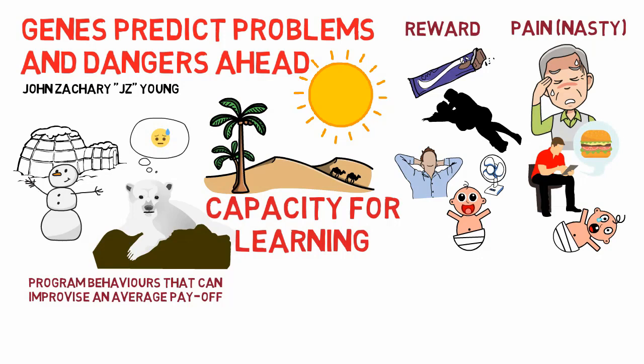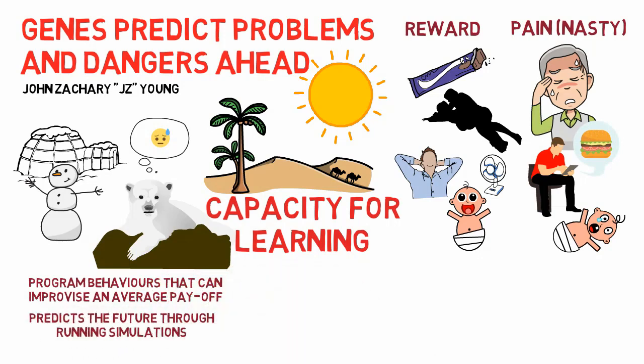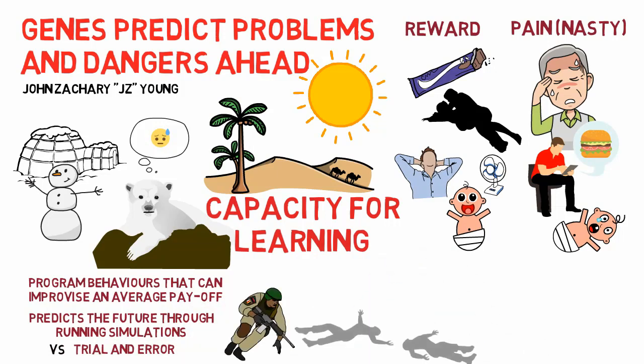The ability to learn helps predict the future and is done through running simulations. Survival machines such as humans do this by imagining situations, alternative actions, and their consequences. Running simulations of the future gives an advantage over survival machines that can only learn through trial and error, which expends time and energy and can often be fatal.